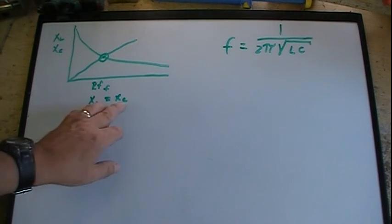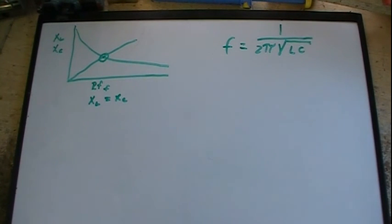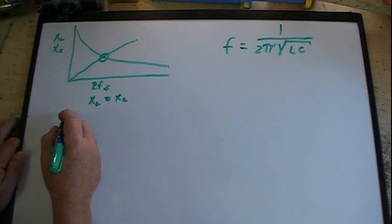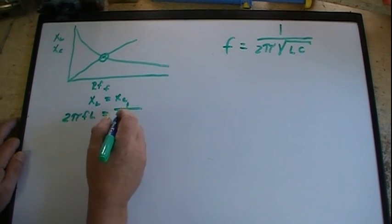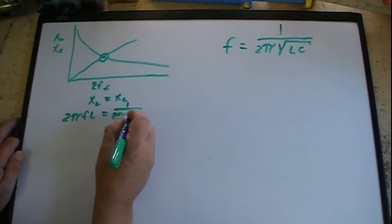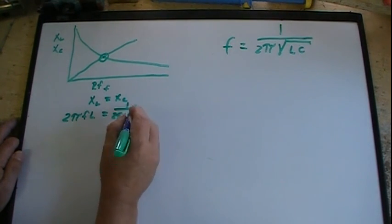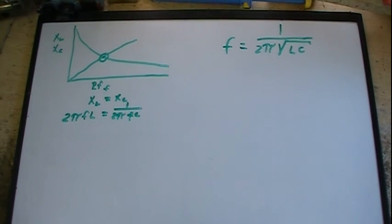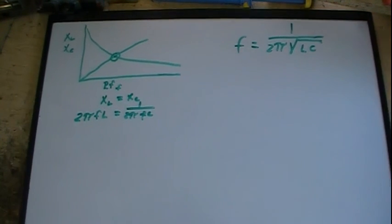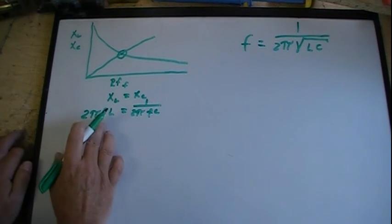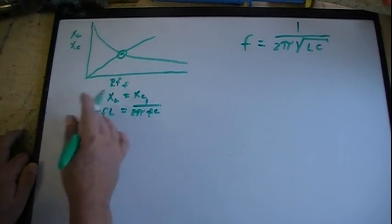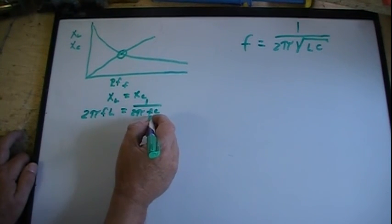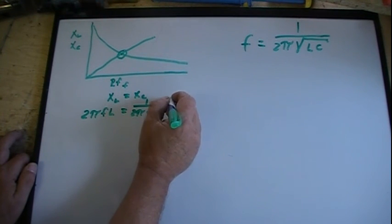Where X_L in ohms equals X_C in ohms is where the resonant frequency is. So what that means is X_L equals X_C — the inductive reactance equals the capacitive reactance at resonant frequency. From that I can write out the two formulas: X_L = 2πFL, and X_C = 1/(2πFC).